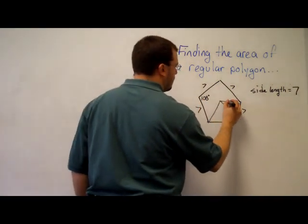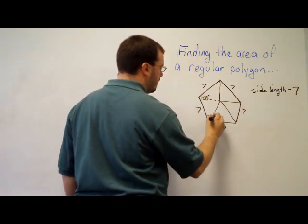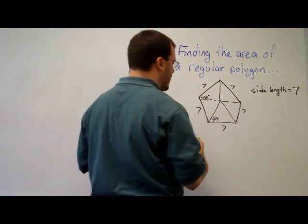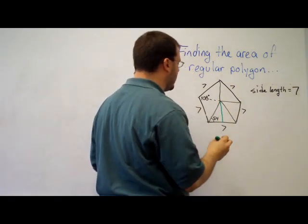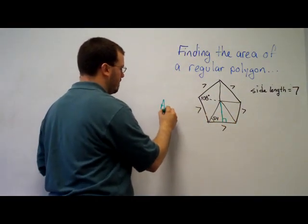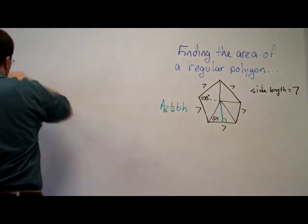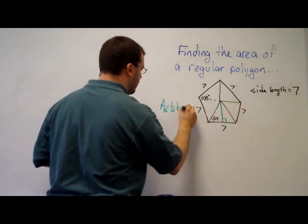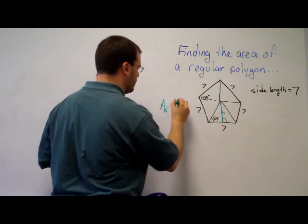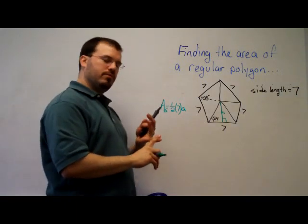We said that each of these isosceles triangles are congruent. So this 108 degrees would be divided in two, so this is 54 degrees. Now I know I wasn't given the apothem, I was given the side length in this problem. But I need to draw the apothem in, because to find the area of any triangle, it's one half the base times the height. Well in this particular problem, our height is a, and our base is 7. So we know our base, but we don't know our height.